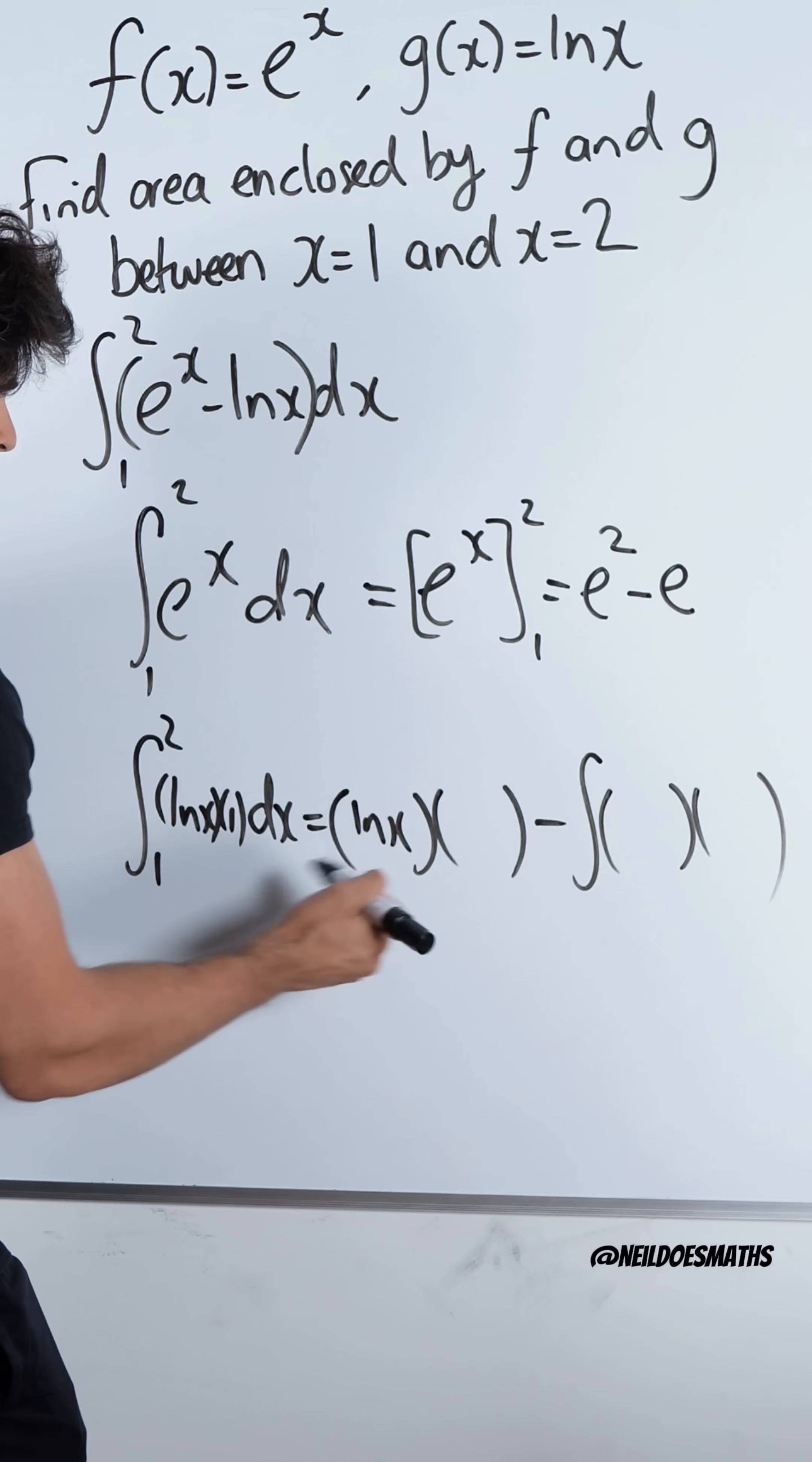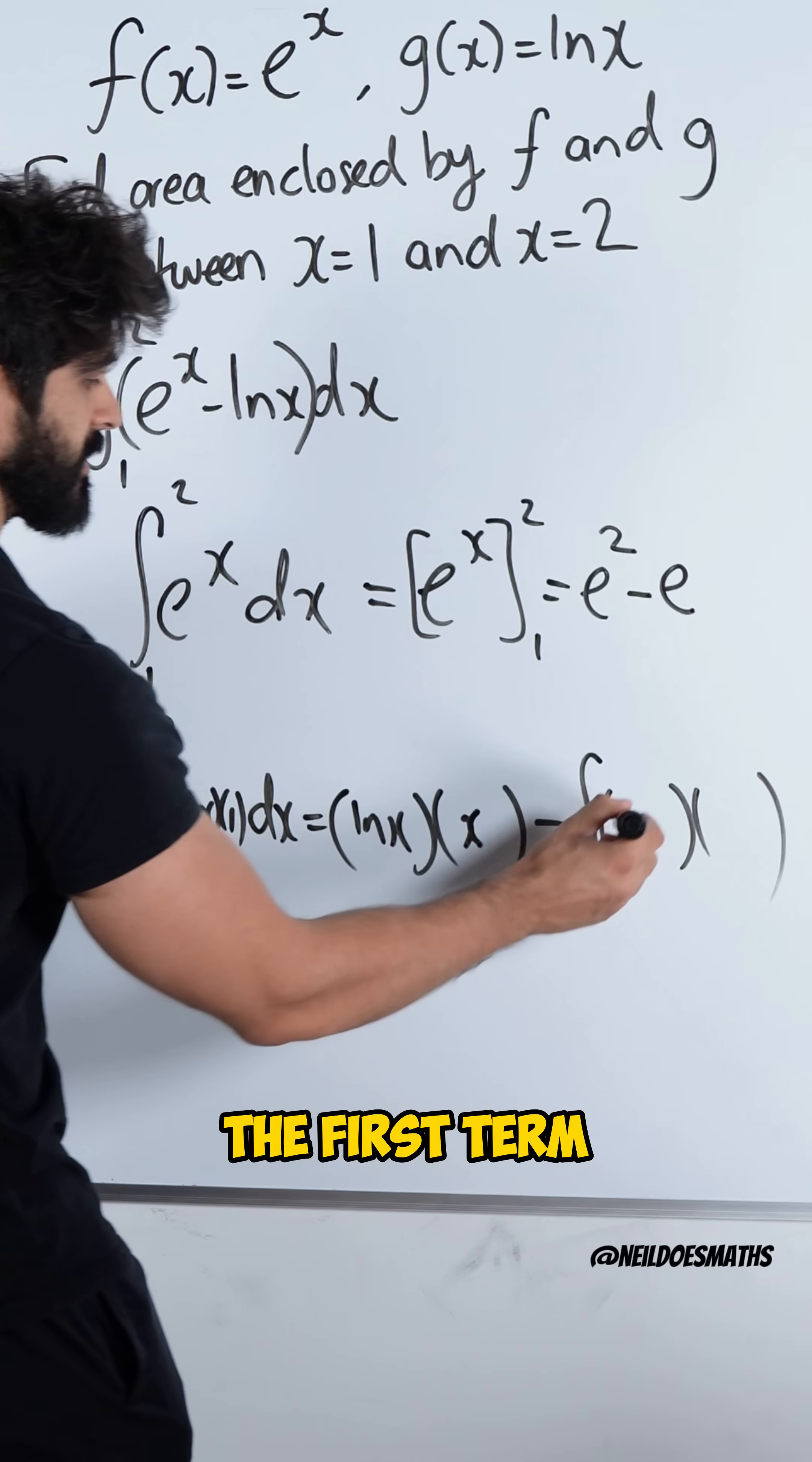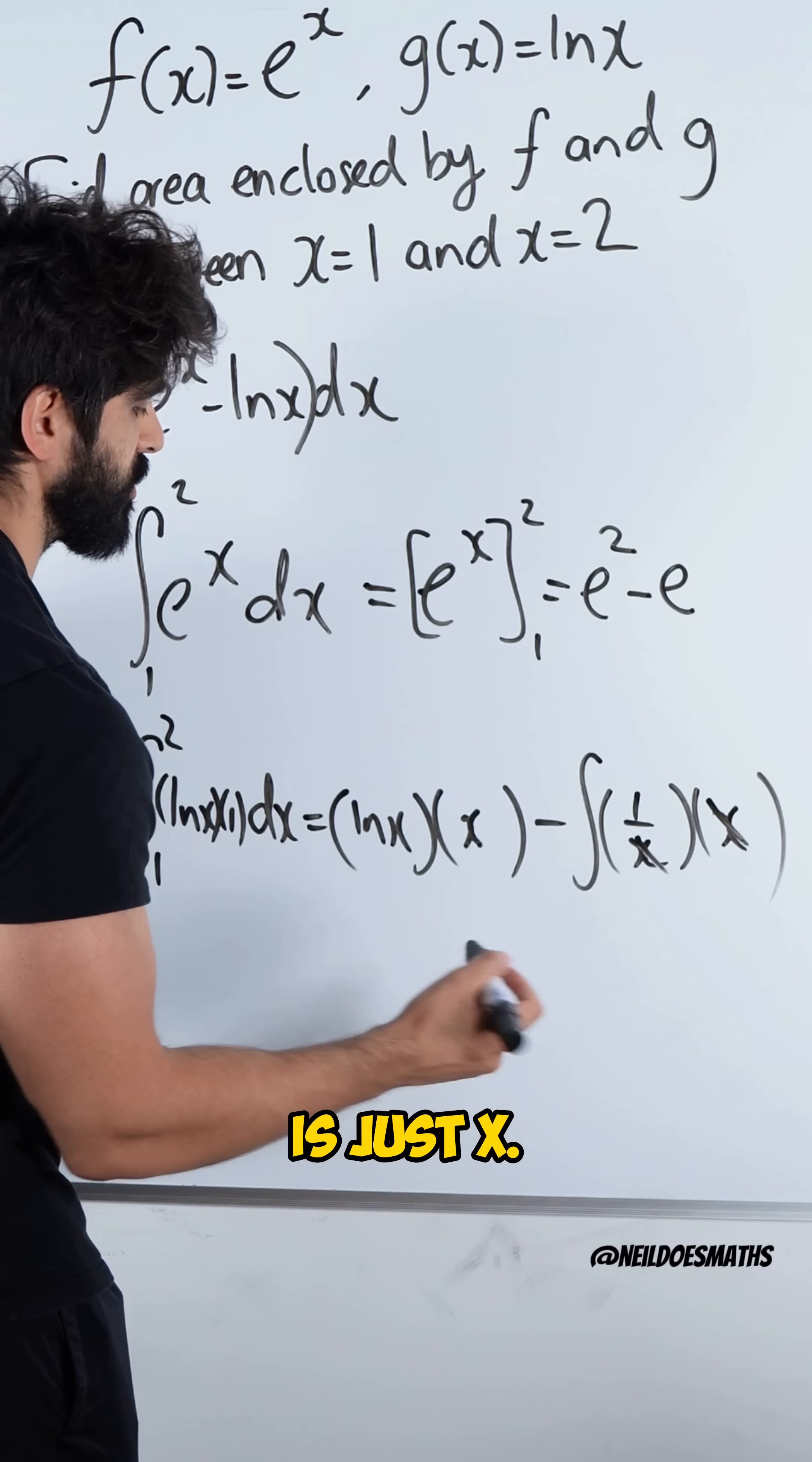We leave the first term. Integrate the second. 1 integrates to x. Minus, differentiate the first term, which is 1 over x. Then we integrate the second. These two brackets are always the same. The x's cancel, and we're left with the integral of 1, which is just x.